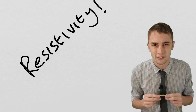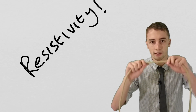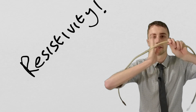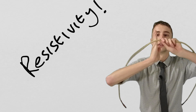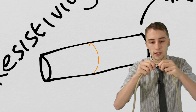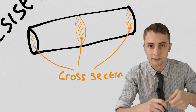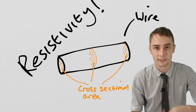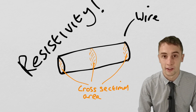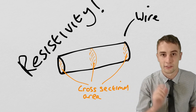Now a better way of looking at it than thickness is to look at something called the cross-sectional area. By that I just mean if I take the wire and I cut it straight down the middle, the cross-sectional area is just the area of one of the exposed faces. A larger cross-sectional area is going to have less resistance.